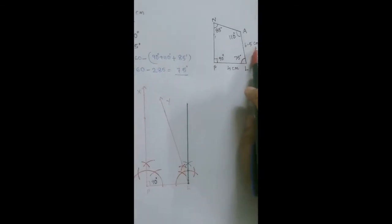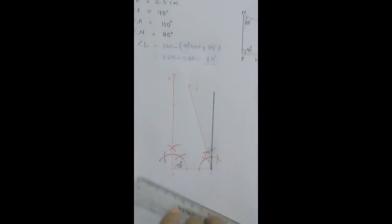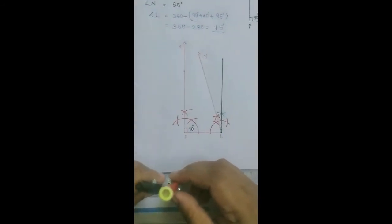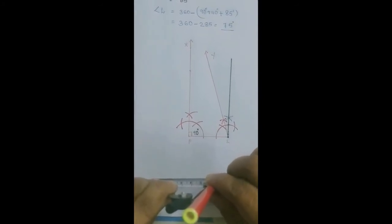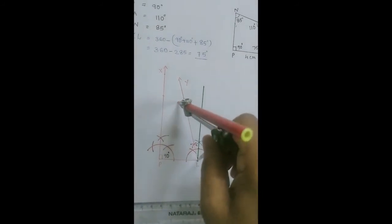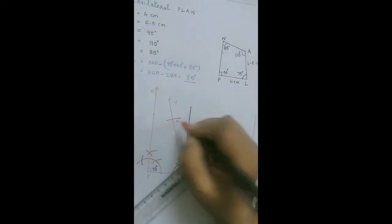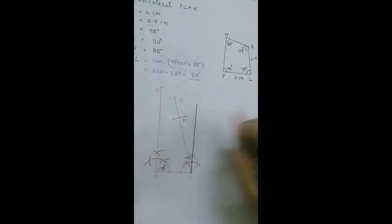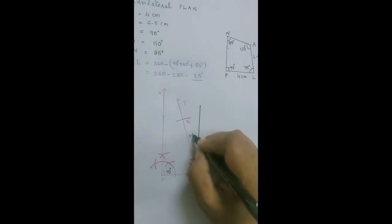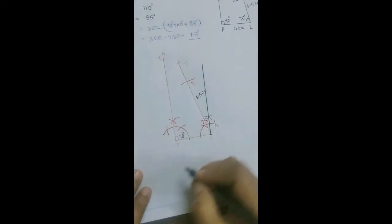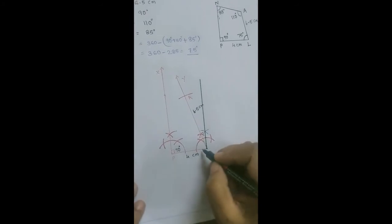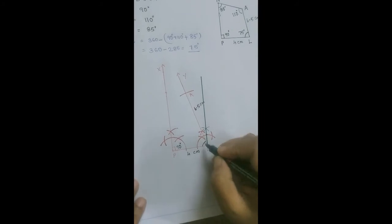Now, with L as center and radius 6.5 cm, draw an arc to intersect ray LY. The point of intersection is our vertex A. Label this point A. The base PL is 4 cm and angle L is 75°.